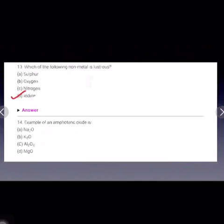Example of an amphoteric oxide is C part, aluminum oxide. Zinc oxide, aluminum oxide are both examples of amphoteric oxides, and these are the oxides which show both acidic as well as basic character.